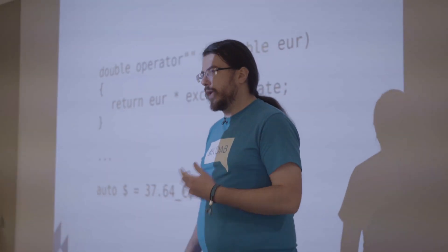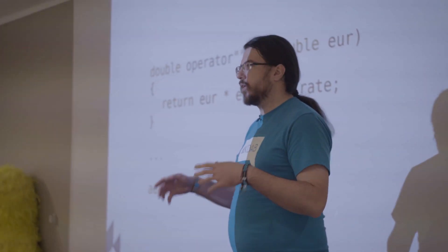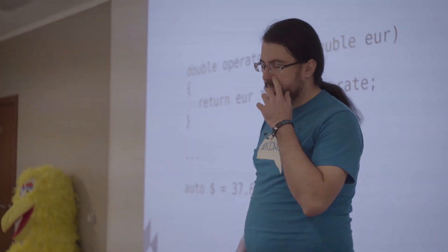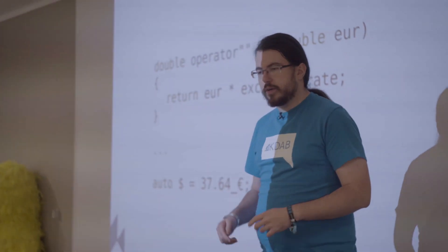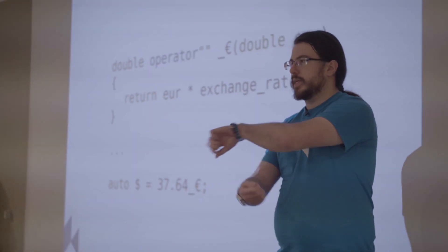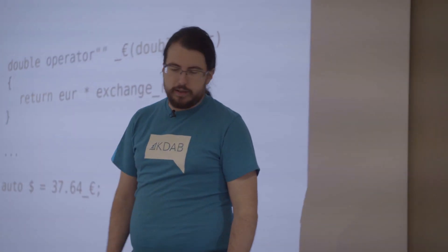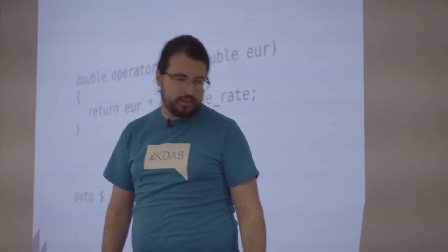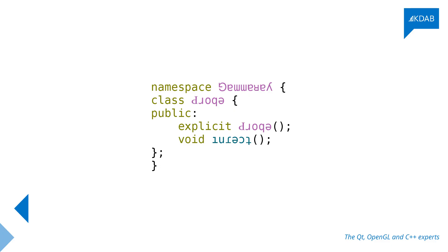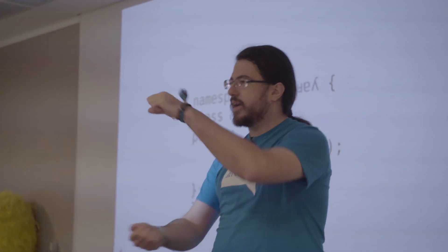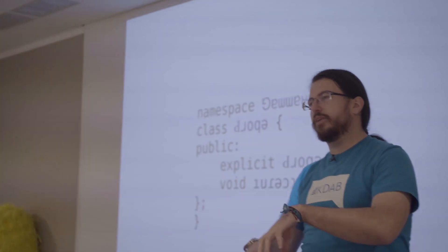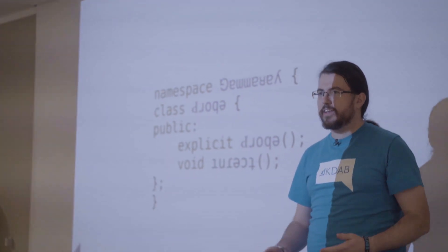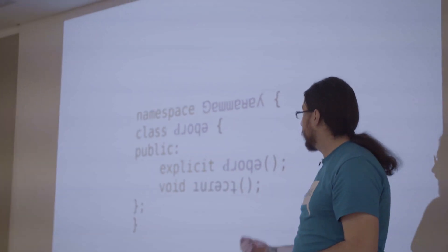Another thing that happens quite a lot when I'm sitting at home programming is that suddenly my screen flips upside down and mirrors. Doesn't happen to you? It's annoying. So I started working around that so I can continue working — basically, I write the code upside down, so when this happens I can continue coding and understanding what the class names are.